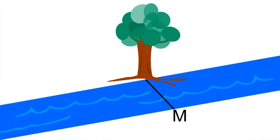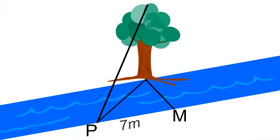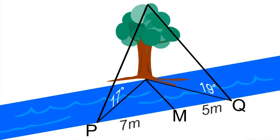M is a point directly opposite a tree, and P is 7 metres to the left of M. The angle of elevation of the top of the tree from P measured 17 degrees. Q is another point 5 metres to the right of M, and the angle of elevation of the top of the tree from Q was 19 degrees.